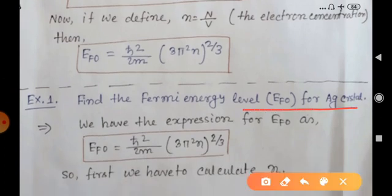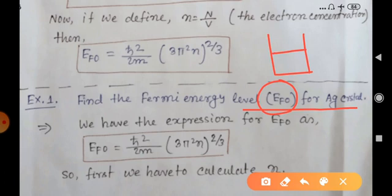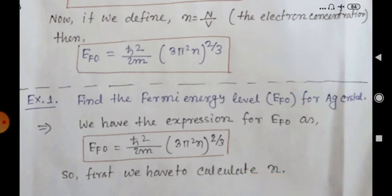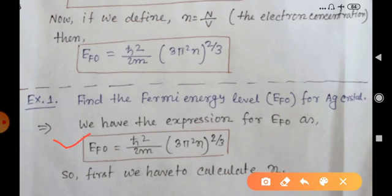Using this expression, we will now find out the Fermi energy level for the silver crystal — that is, the energy value of the Fermi energy level when we consider silver as our metal. We have Ef0 = (ℏ²/2m)·(3π²·n)^(2/3).